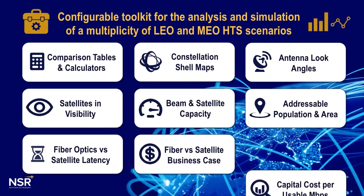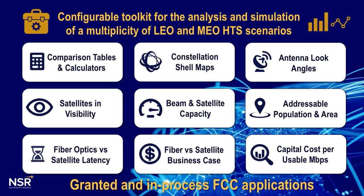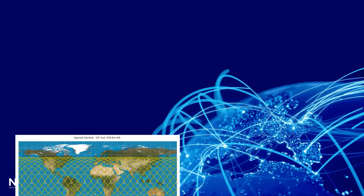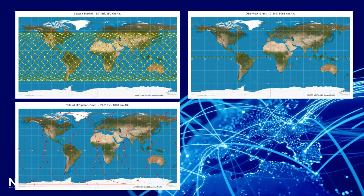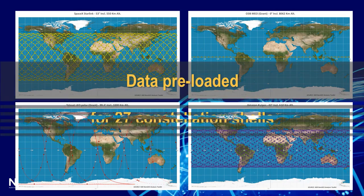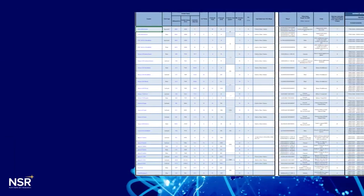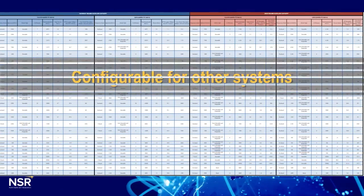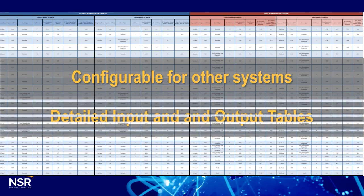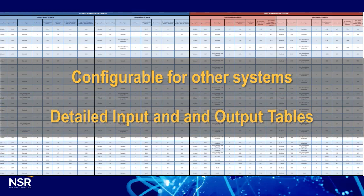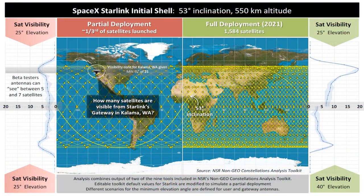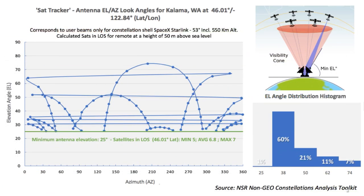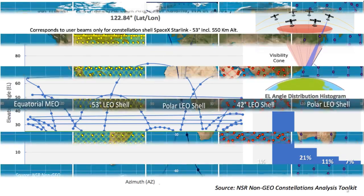NSR has developed nine configurable tools utilizing data collected from 27 constellation shells, both granted and in-process FCC applications, in order to evaluate each HTS constellation. The NSR NCAT gives you the opportunity to add additional information from your internal database to evaluate each HTS constellation and simulate possible future modifications or other constellation initiatives.